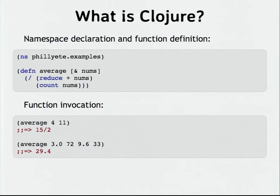Now you can see this is dynamically typed. I can invoke this function on exact integers and I get an exact ratio answer. I can also invoke it on floating point numbers and I get a floating point answer. I could also invoke it on a string, and I get a runtime error.